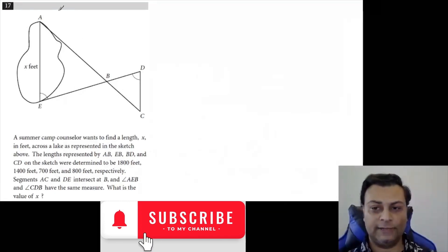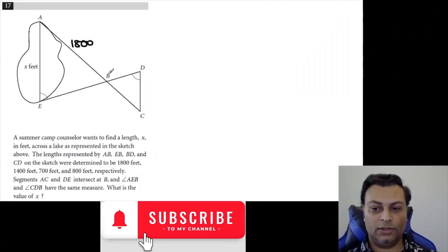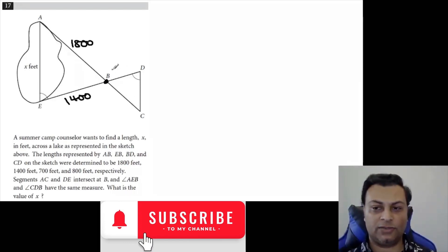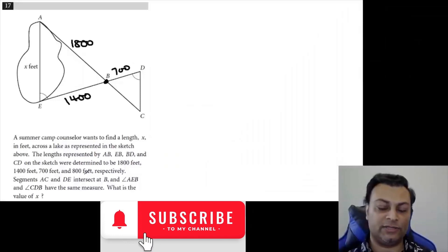AB is 1800. Then you have EB is 1400, so EB is this part, 1400, that's from E just to B, not to D. We have BD which is 700, so this is 700.